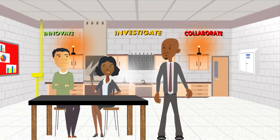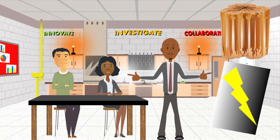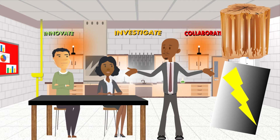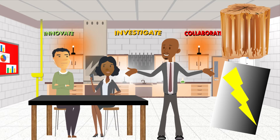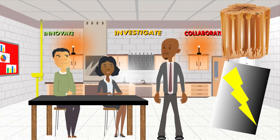They wondered why wood could not conduct electricity, but metals could. Wood is an insulator and metals are conductors, right. But why? Why is wood an insulator? Why are metals conductors? The structure of the atoms in wood and metal are different, and that causes them to function differently.